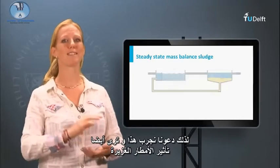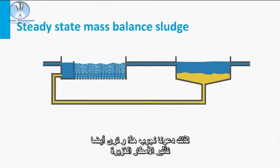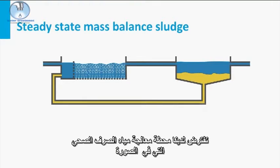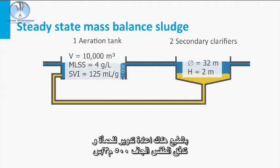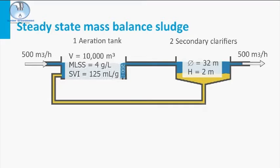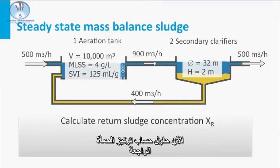So let's practice with this and also see the influence of heavy rain. Assume we have the sewage treatment plant that is pictured here. There is one biological tank and two settlers of the dimensions shown. Of course there is a sludge recycle and the dry weather influent flow is 500 cubic meters per hour and the recycle flow is 400 cubic meters per hour.